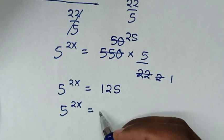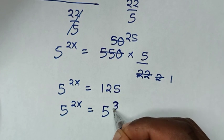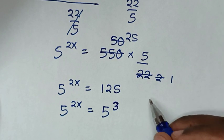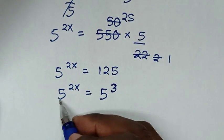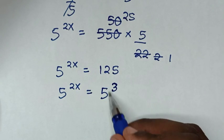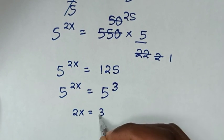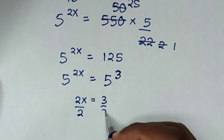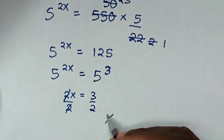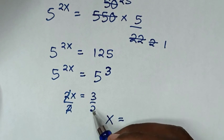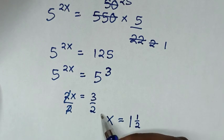125 is the same as 5 power 3, since 5 times 5 times 5 is 125. Now we have the same base on both sides, so we compare the powers. It will be 2x is equal to 3. Then we divide by 2 on both sides, so this and this will cancel, giving x is equal to 3 over 2, or 1 and a half.